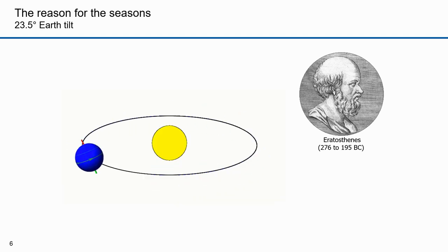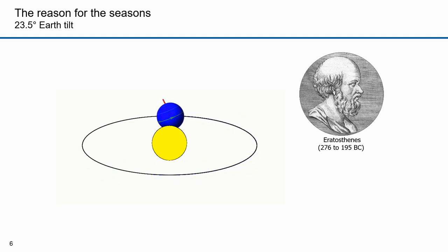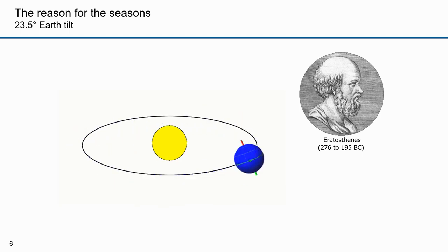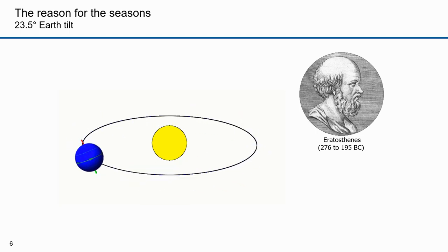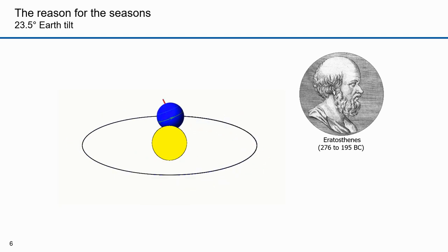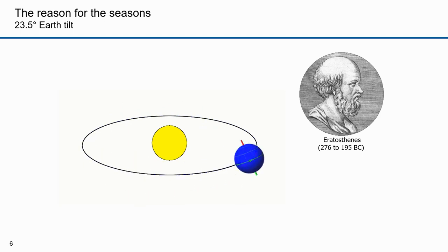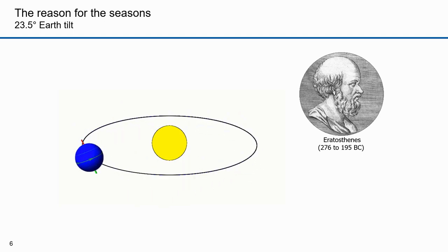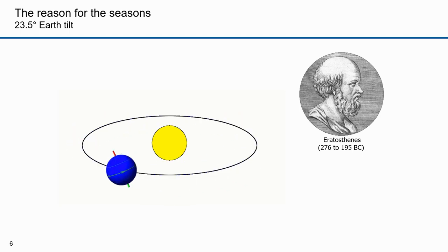Eratosthenes also discovered the reason for the seasons. He theorized that the earth is tilted along an axis of spin relative to the sun. During some times of the year, part of the earth is tilted toward the sun, and during other parts it is tilted away. Some think that summers are hotter because the earth is closer to the sun during summer. In the northern hemisphere, the opposite is actually true — the earth is farther away during summer and closer during winter. It is the tilt that makes the weather hotter in summer in the northern hemisphere.